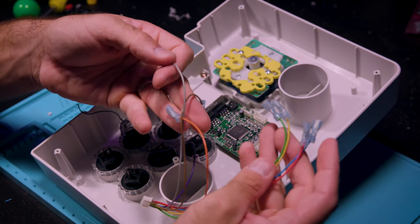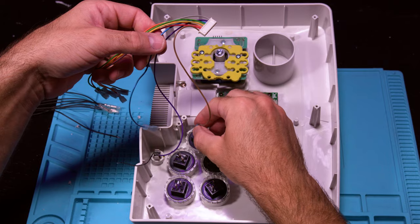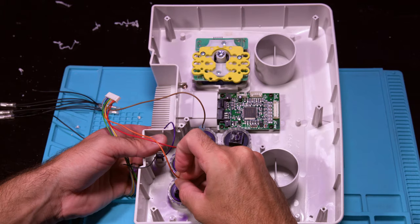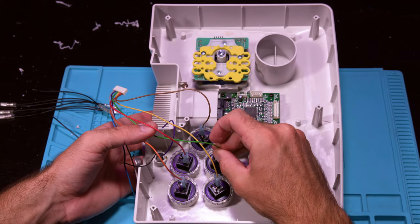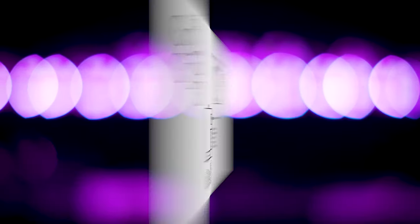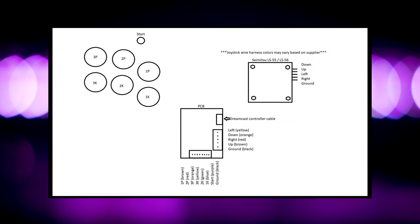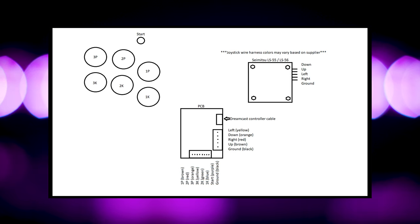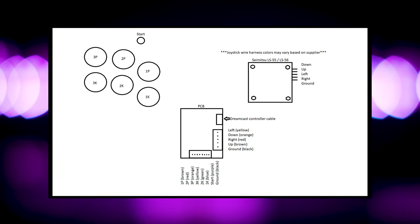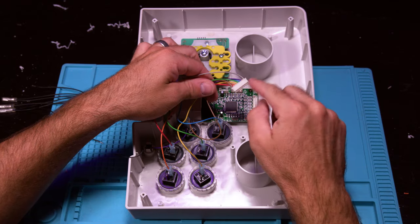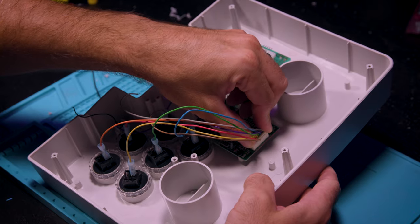Now that you have your quick disconnects on the end of each wire of your button harness, it's time to attach those to the buttons themselves. I've made a wire diagram that should make it pretty clear in terms of which wire goes to which button. Once that's done, go ahead and plug in your button harness to the Dreamcast PCB.